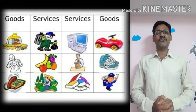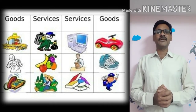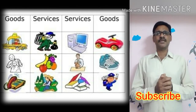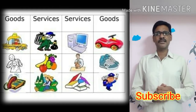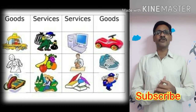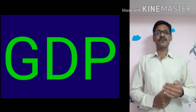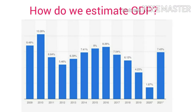For a country, we take the value of goods and services produced in that country to estimate its total income. Here we come to one conclusion: GDP means Gross Domestic Product — the value of goods and services produced in a year in a country is called GDP. So how can we estimate or calculate the GDP?